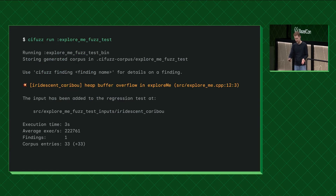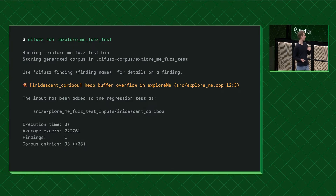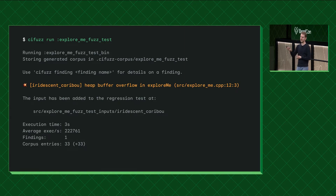If you run cifuzz run on that Bazel target, it starts fuzzing. Usually this is CPU intensive and takes a lot of time, but because this example is so simple, it takes just three seconds to go through over 200,000 inputs and find the crash. We found a 'reticent caribou,' which is our deterministic speaking name for this finding — it's a heap overflow in explore_me at line 12. You can then use cifuzz to get more details, start debugging, and start sharing the finding.